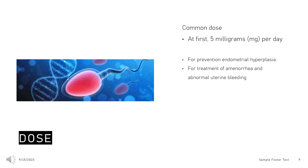For treatment of amenorrhea and abnormal uterine bleeding: Adults, at first, 5 mg per day. Your doctor may adjust your dose as needed. However, dose is usually not more than 10 mg per day. It is usually taken every day for 5–10 days.